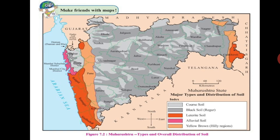In the map, have a look at the index and you will be able to see the five types of soils found on the Maharashtra plateau. In the state of Maharashtra, we have five different types of soil: the first is coarse soil, second is black soil shown in dark grey, then laterite soil, alluvial soil, and finally yellow-brown soil in the hilly regions.